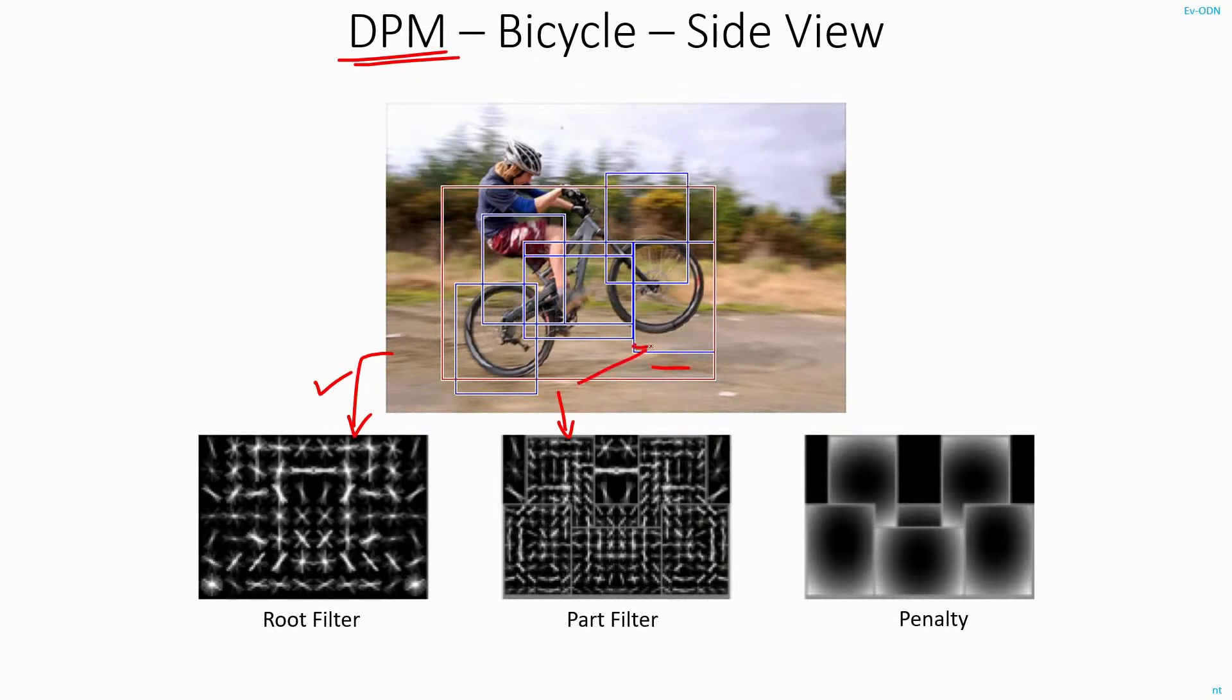But since the cycle is inclined at a different angle, the DPM part detector will kick in and will be able to individually identify the rear and different portions of the wheels, then the frame and the handle separately.